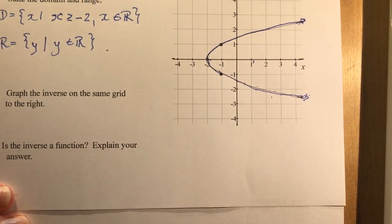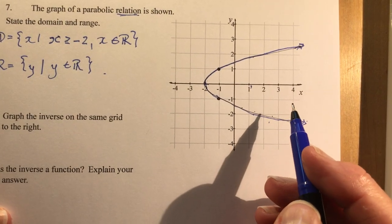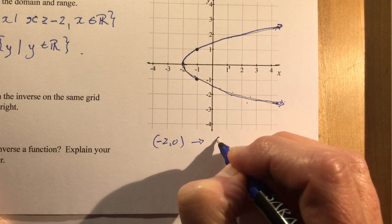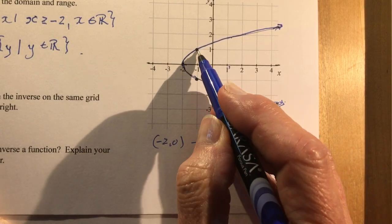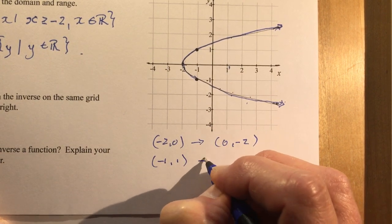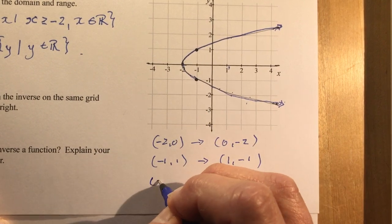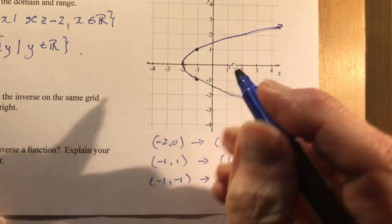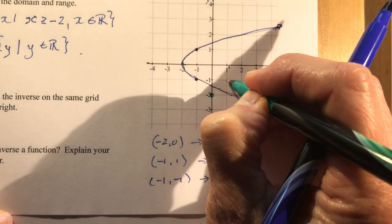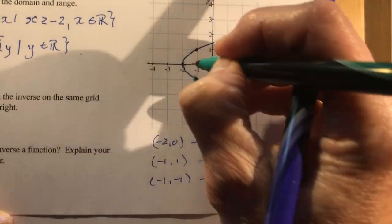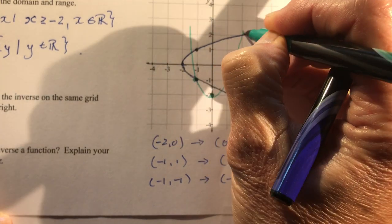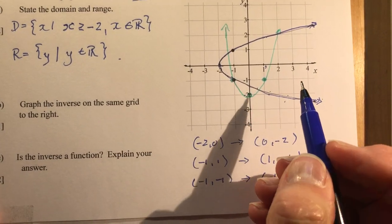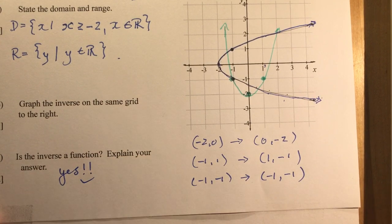Graph the inverse on the grid to the right. How do you graph an inverse? All you have to do is find some points and switch them around. If I had minus 2 and 0, that becomes 0 and minus 2. And minus 1 and 1 becomes 1 and minus 1. And minus 1, minus 1, we switch those around, they're still the same thing. So now I have to graph it. I have 0 and minus 2, I have 1 and minus 1, and I have minus 1 and minus 1. And my parabola is going to go like this. Is the inverse a function? Yes, it is. Because for every value of x, there's one value for y.